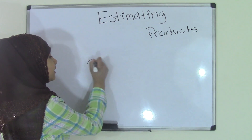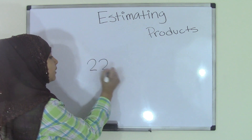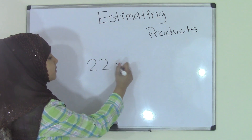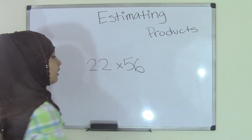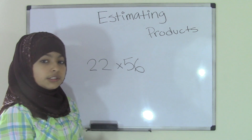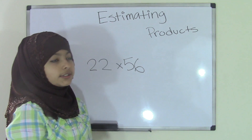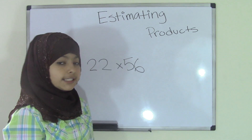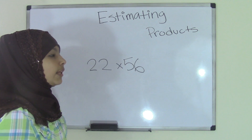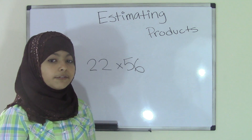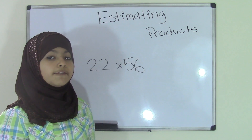So let's say we have 22 times 56. The first thing you need to do is round these two numbers to the nearest ten place in this case. Now keep in mind that whenever you're rounding,